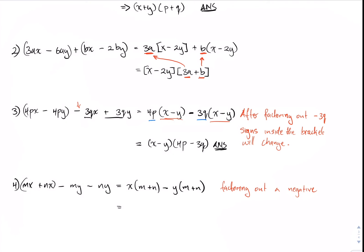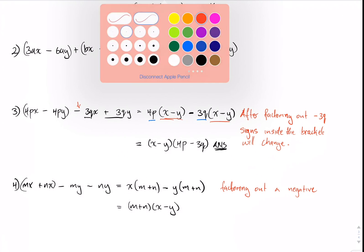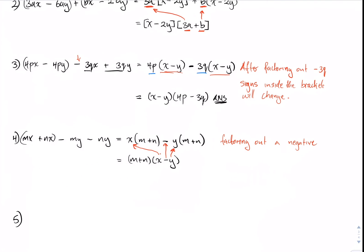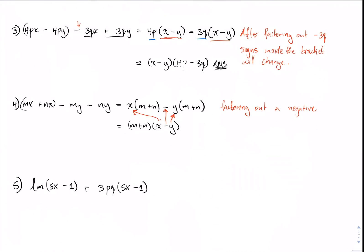Example five: this one is halfway finished — we just need to recognize what is common and factor it out. We have lm times 5x minus 1, plus 3pq times 5x minus 1. Observing the expression, 5x minus 1 is common in both terms, so factoring it out gives us 5x minus 1 times lm plus 3pq. That is our final answer. Please remember to like, share, and subscribe — we'll see you in the next video.